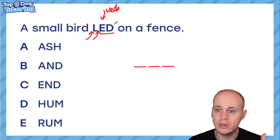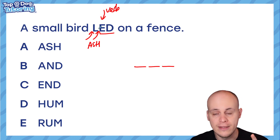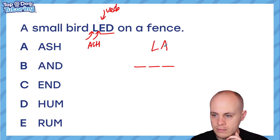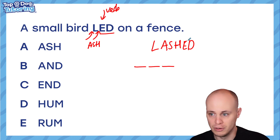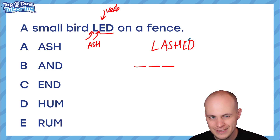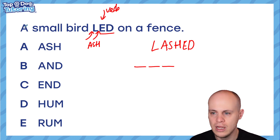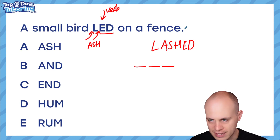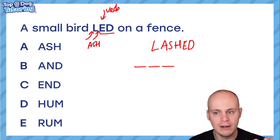My next tip: you could also start guessing what it could be. If it began with L, what could it be? What if I put ASH in there? I would get the word lashed. Now that is a word — if someone lashed out, it means they got really cross, really angry. So have I got the answer? I've got a real word, that's how you spell lashed. No — because remember, it has to make sense in the context. A small bird lashed on a fence doesn't make any sense.